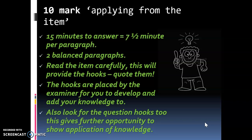A quick reminder about what you have to do on a 10 mark when applying from the item. It is really important as it appears on all three A-level papers. You've got 15 minutes to answer — 7.5 minutes per paragraph. Make sure you've got two equally balanced paragraphs. Make sure you read the item carefully; this will provide the hooks. You've got to quote them or reference them. The hooks are placed by the examiner for you to develop and add your knowledge to. Also look for the question hooks, as this will give you further opportunity to show application of your knowledge.